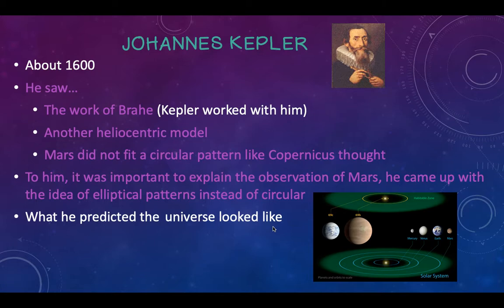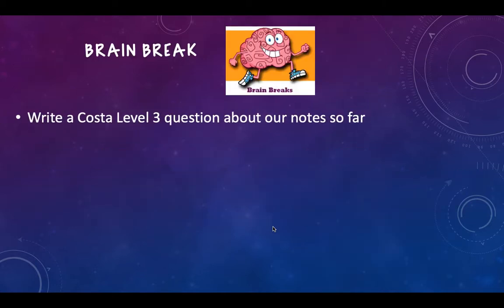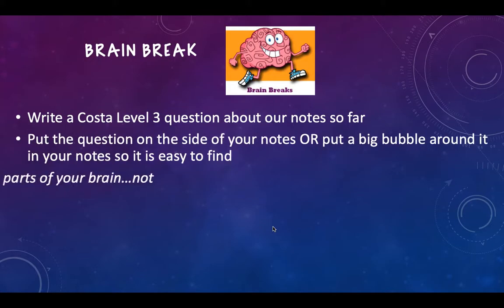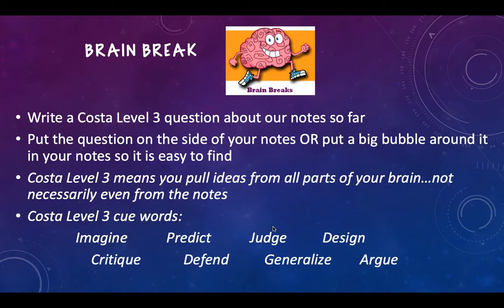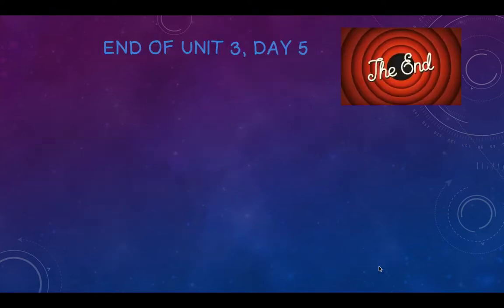That is a whole bunch of different ideas about the solar system, so now it's time to put those ideas together. Go ahead and take your third brain break and write a level three question — something about predicting what a new solar system model might look like, or defending the heliocentric model, or arguing against the geocentric model. Whichever one you pick would be a good level three question.